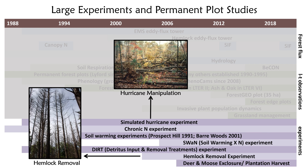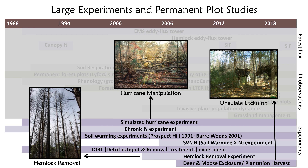More recently, in the early 2000s, the hemlock removal experiment was initiated to look at the impacts of hemlock dieback in response to invasion by the hemlock woolly adelgid. A few years later in the mid-2000s, the ungulate exclusion experiment was initiated to look at the role of deer and moose browsing on forest structure and function. But what I'm going to focus on today are a set of experiments that my group currently manages, focused on long-term soil warming and soil nitrogen enrichment.